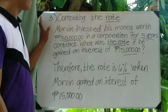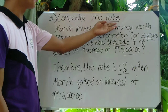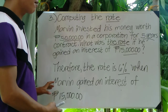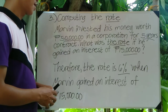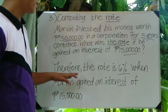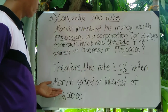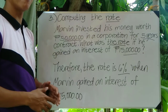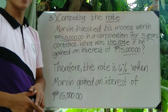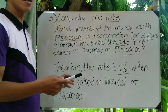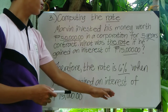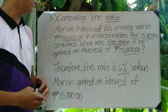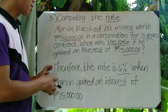In situation number three, our purpose was to compute the rate. We found the answer: therefore the rate is 6% when Marvin gained an interest of 15,000 pesos. For civil service or university entrance exams, you can go directly to the answer. The scholarly sentence format is for classroom assignments.